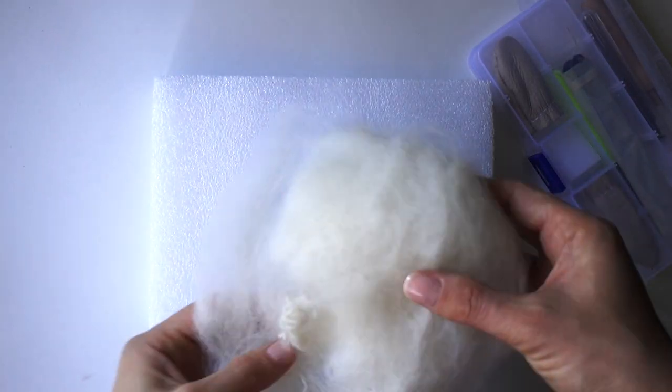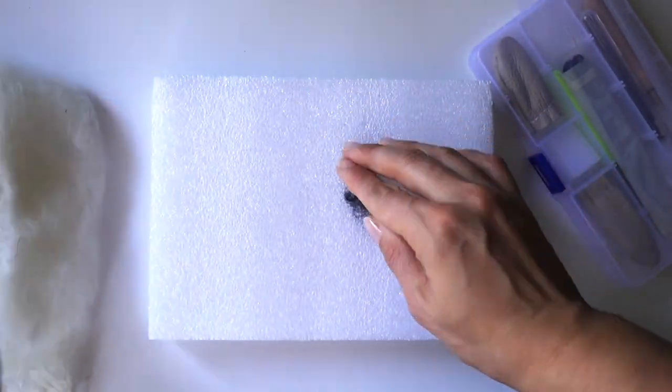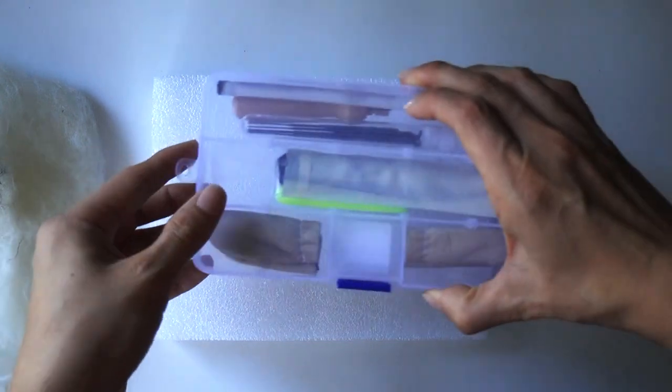To make this adorable mouse ballerina you'll need felting wool. I'm using the core white wool for the head and body and a little bit of black wool for the eyes.